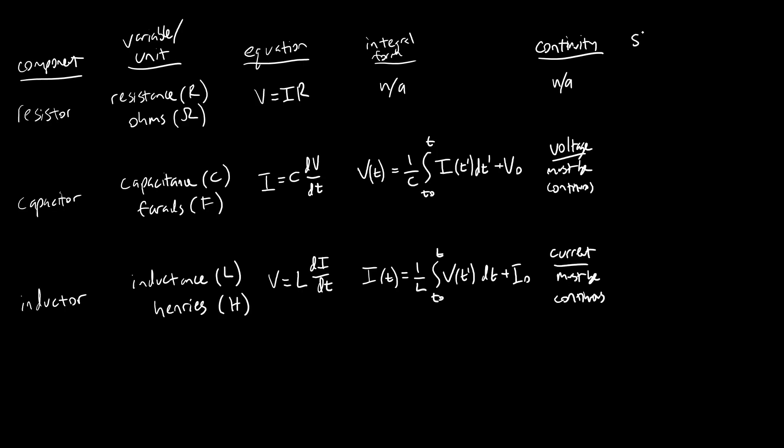We also have a steady state rule here, which again is N/A for the resistor because we don't have a differential equation describing its behavior. But for the capacitor we have that in steady state, the current goes to zero. So it behaves like an open circuit. We get that again from looking at this equation. Steady state means all the derivatives are zero, nothing is changing. So if dV dt is zero, then I must be zero.